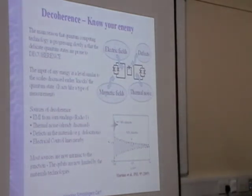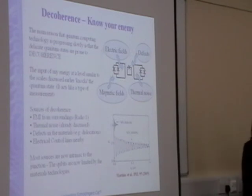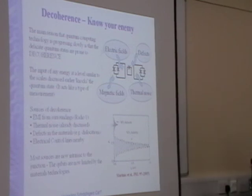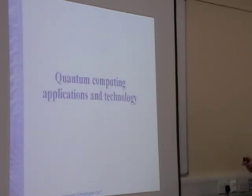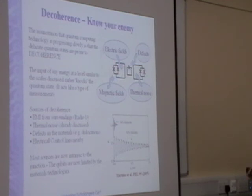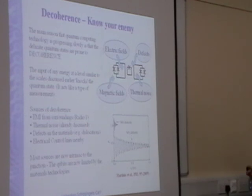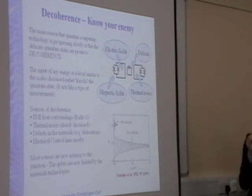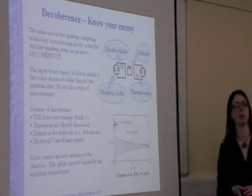The main reason we have problems with quantum computing is decoherence, which means you can no longer tell the difference between your states 0 and 1 because the system is interacting with the environment. This causes the states to become mixed together — they become entangled and coupled with other states, and they're no longer a nice, pure, isolated quantum system. Sources of decoherence include electric fields from nearby equipment, magnetic fields, thermal noise, which can cause a jump in the quantum system, and defects in the material itself. If there is a dislocation in the crystal, that can cause a charge to hop about, producing electric and magnetic fields. All these things act together to destroy your coherence.